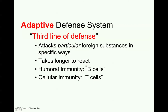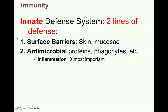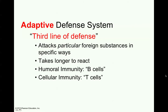So those would actually be your first two lines of defenses. Here are lines one and two. And then the third line of defense would be your adaptive defense system. This system attacks particular foreign substances in specific ways. It does take longer to react and it's composed of two different types of immunities: humoral immunity provided by B cells or B lymphocytes, and cellular immunity carried out by T cells or T lymphocytes.